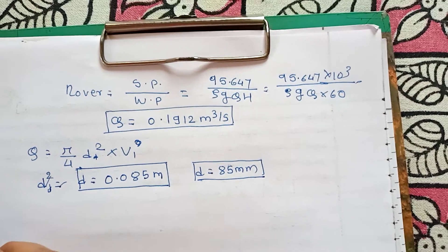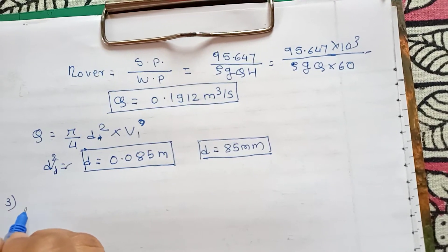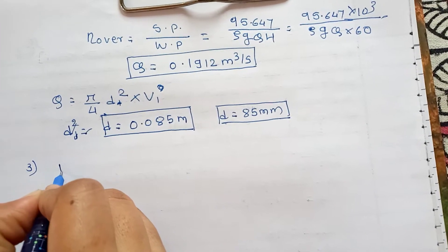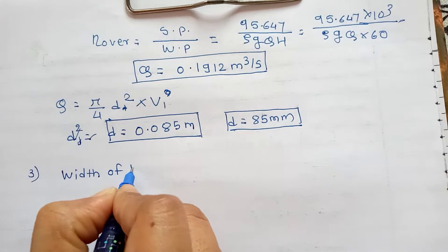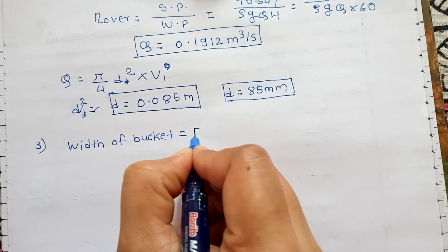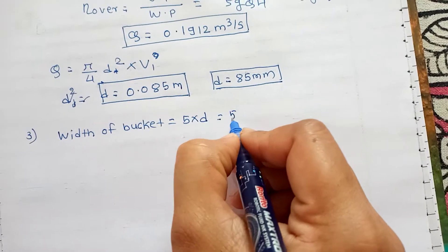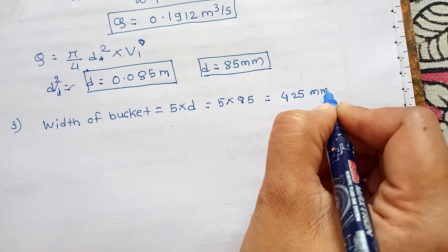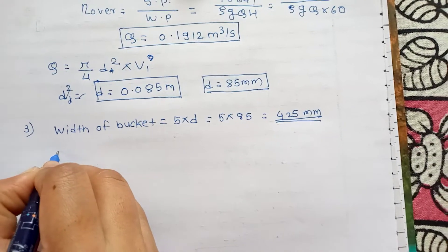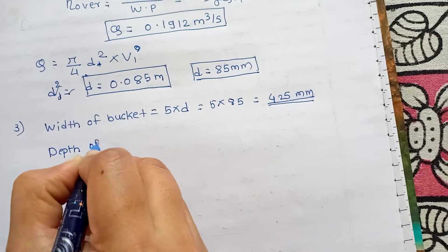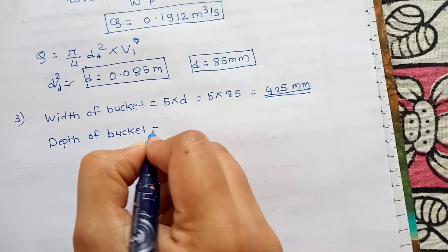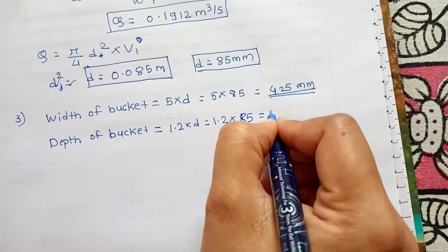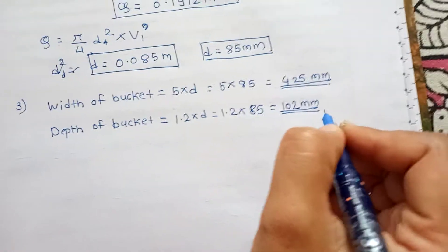Step 4: Find width and depth of the bucket using empirical relations from the design formula list. Width of bucket = 5 × d = 5 × 85 mm = 425 mm. Depth of bucket = 1.2 × d = 1.2 × 85 mm = 102 mm. These are our next two answers.